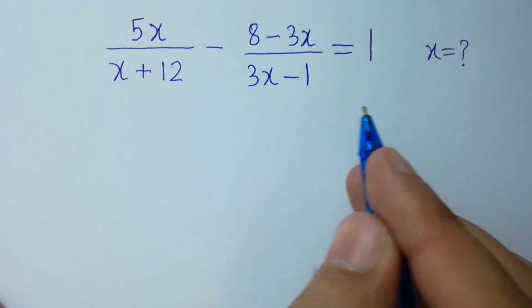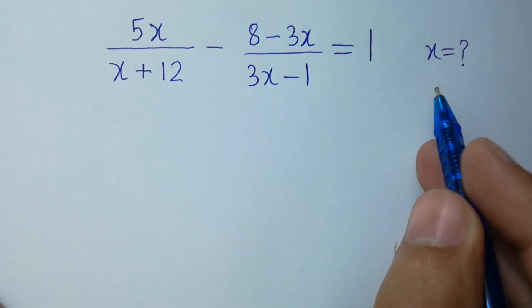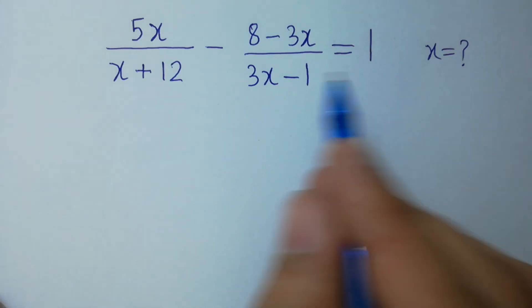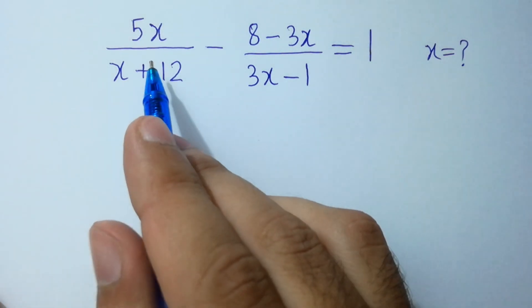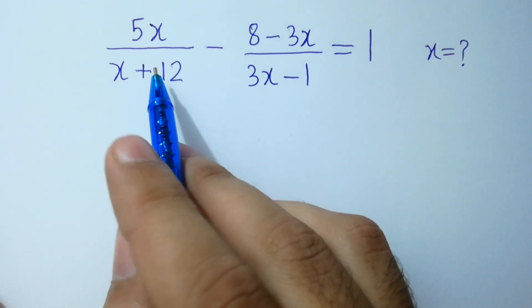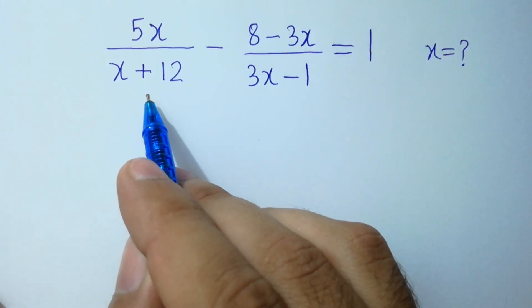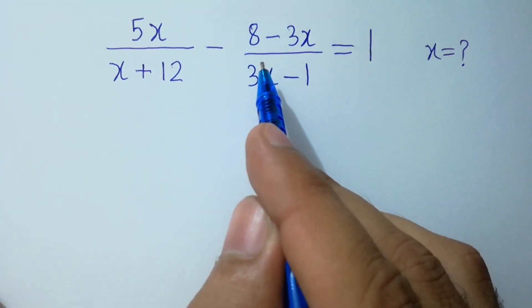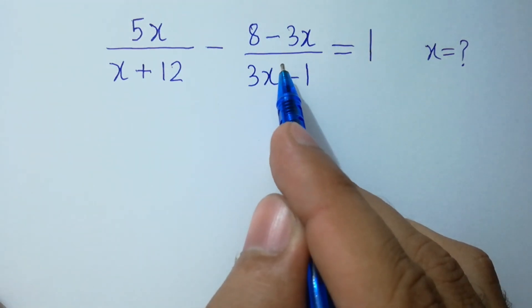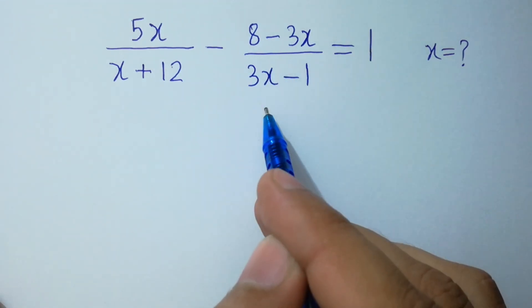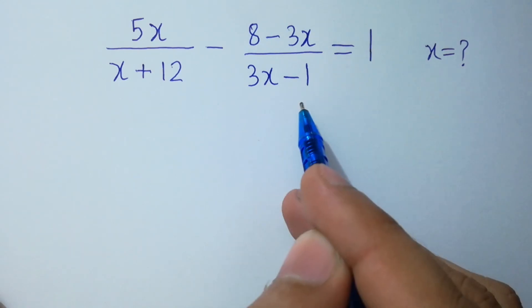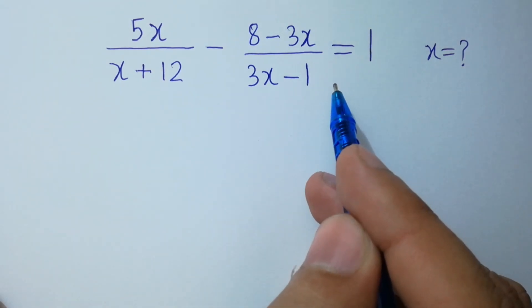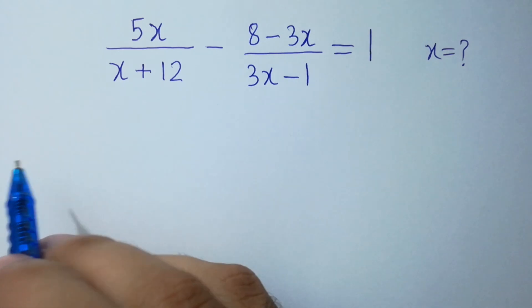Hello friends. Find the value of x if 5x over (x plus 12) minus (8 minus 3x) over (3x minus 1) equals 1. Let's solve it.